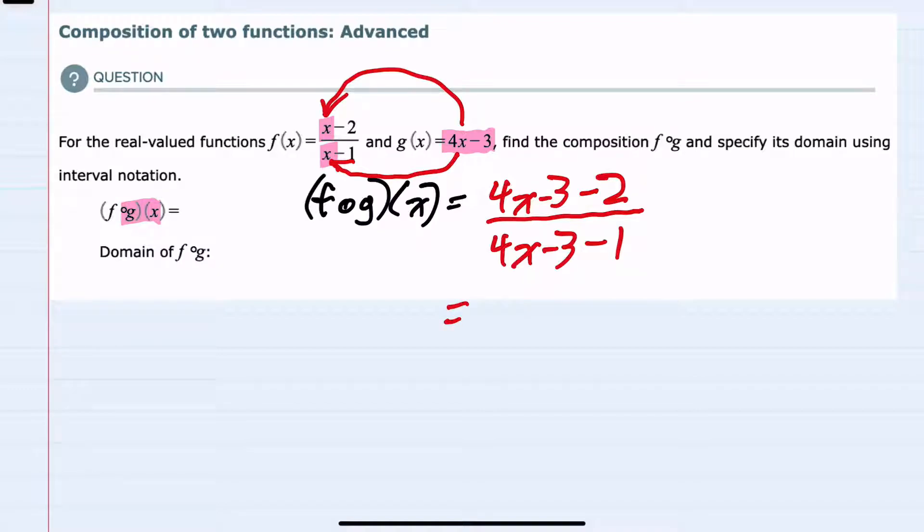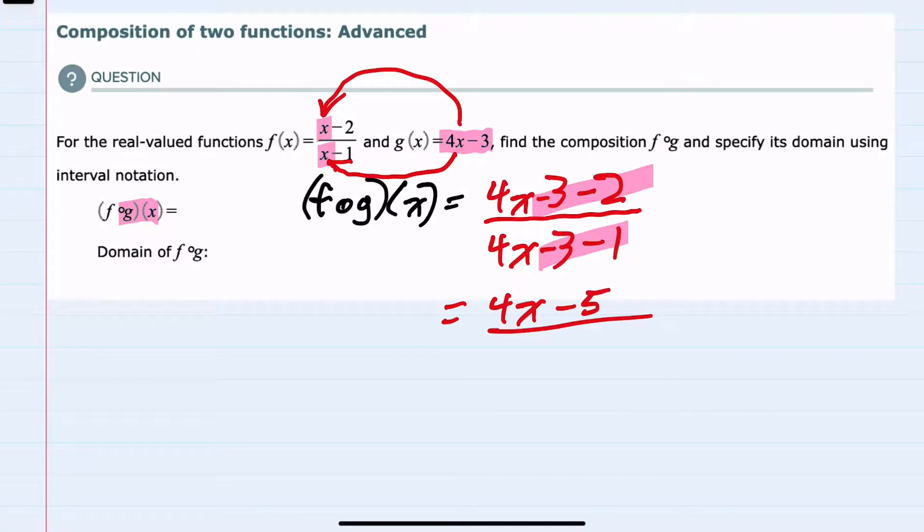I can then simplify the numerator as 4x minus 5, simplify the denominator as 4x minus 4. And then to find the domain of this composite function, now that we've got it, we can see that it would be limited by the fact that the denominator shouldn't be 0.